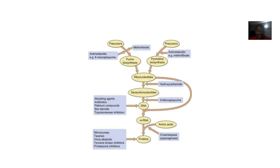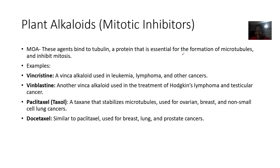Plant alkaloids are also known as mitotic inhibitors. These agents bind to tubulin, which is a protein essential for the formation of microtubules, and they inhibit mitosis. If mitosis is blocked, the cell cannot form copies of itself. Examples of these drugs include vincristine, vinblastine, paclitaxel, and docetaxel.